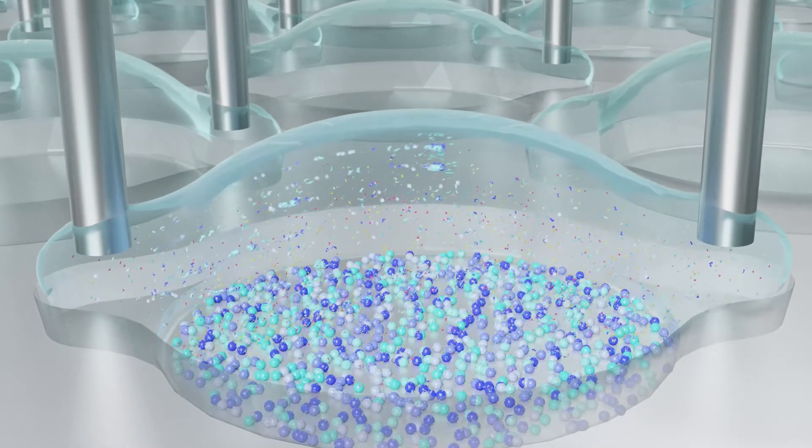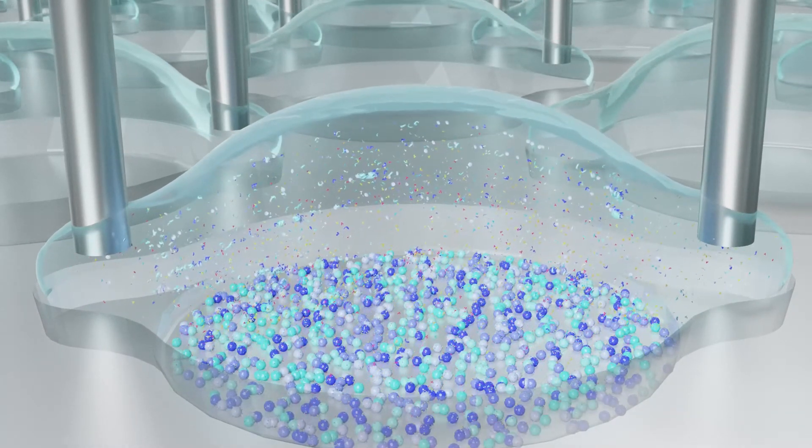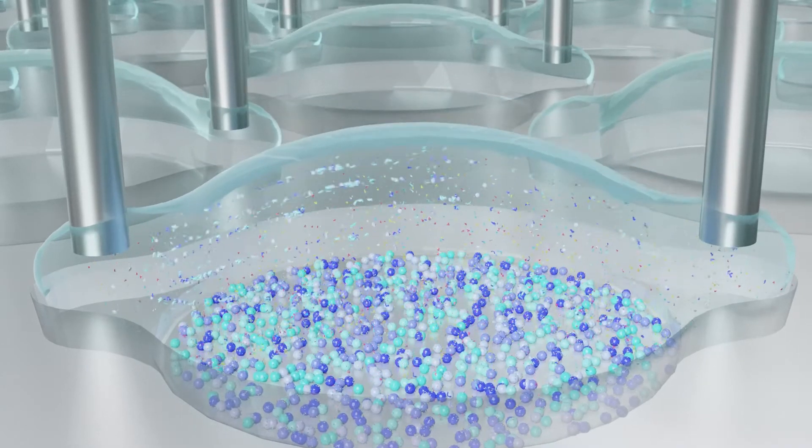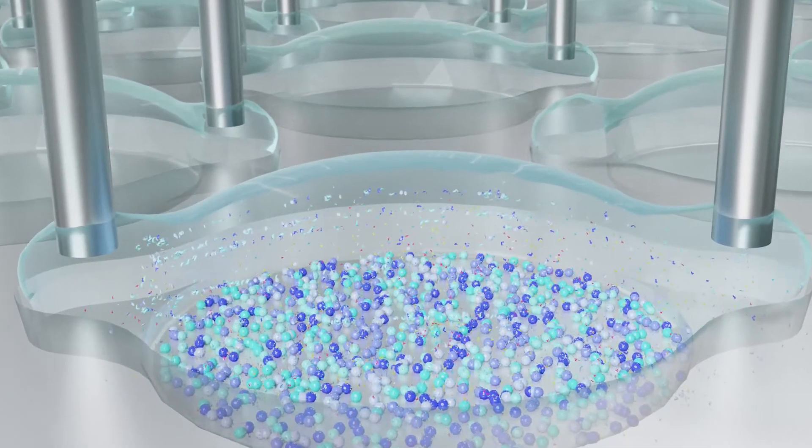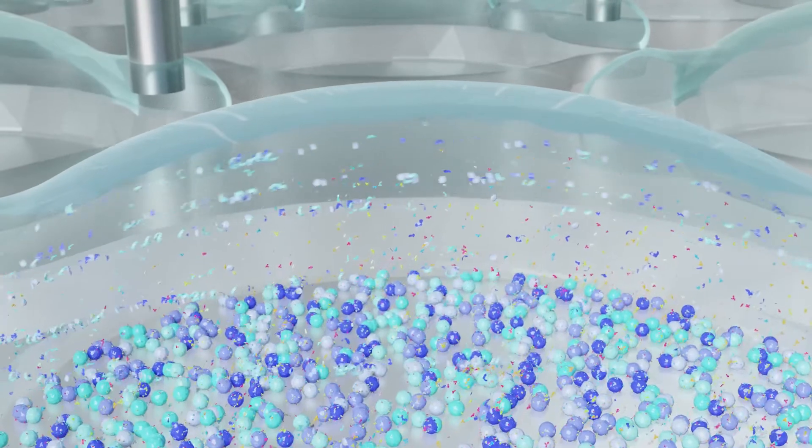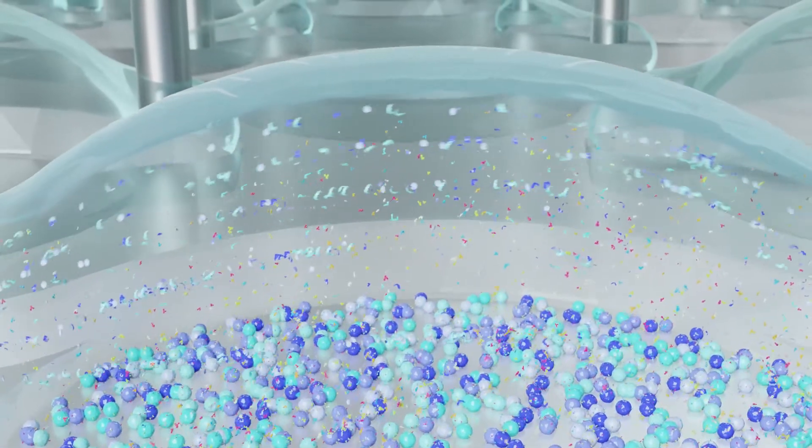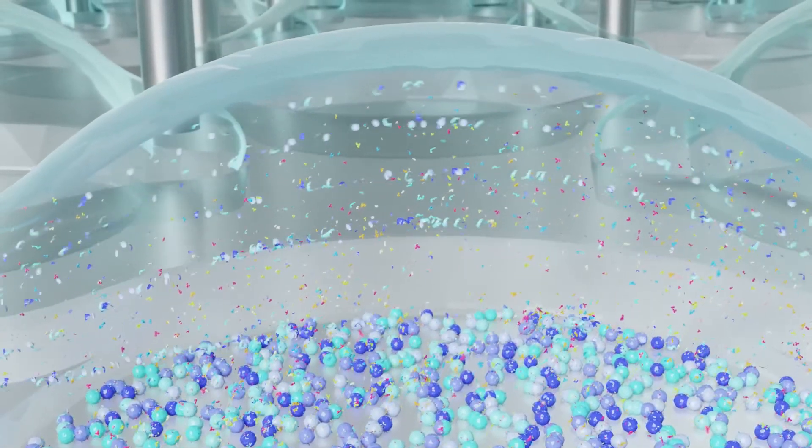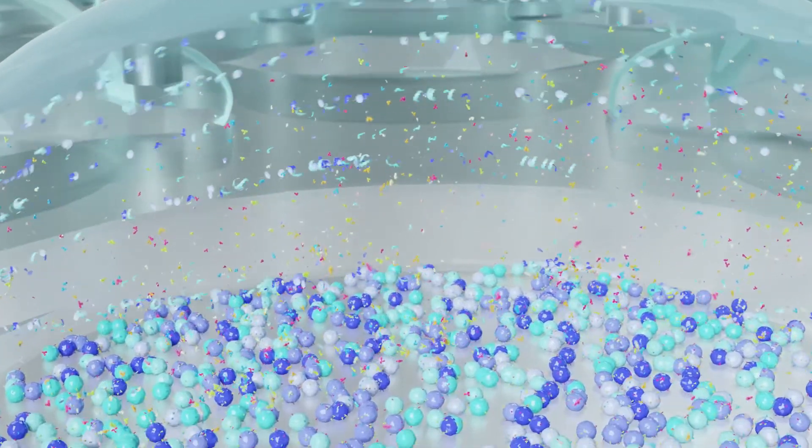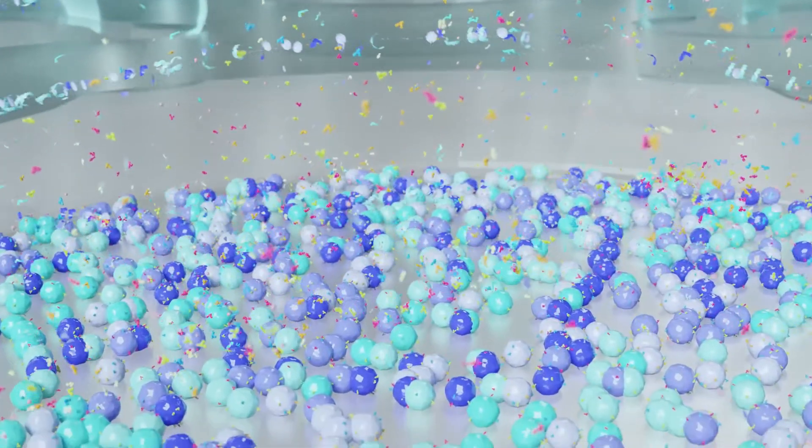The nozzles initiate laminar flow by precisely dispensing and aspirating buffer at the opposing satellite areas of each well. The low wall, in combination with low flow rate, creates laminar flow with the greatest velocity at the top, while rates are near static at the bottom where the cells of interest are located.